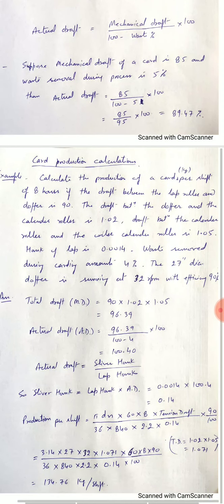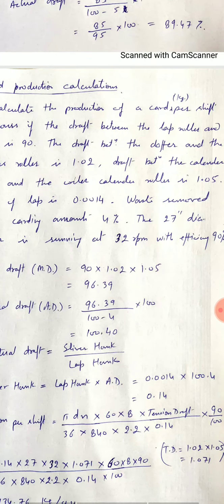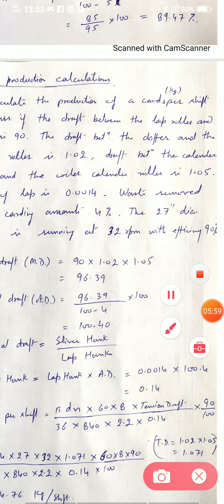Now the production per shift can be calculated by simple formula of English cotton count. Three parameters are there: length, count and weight. In the data we have given length delivered. We can calculate through data the length delivered and we know the hank of sliver. So from production formula pi dn multiplied by 60. Here pi dn is surface speed of doffer. Initially it is in inches per minute. So it is multiplied by 60 to convert into hour. Then multiply by 8 to convert it into per shift of 8 hours.